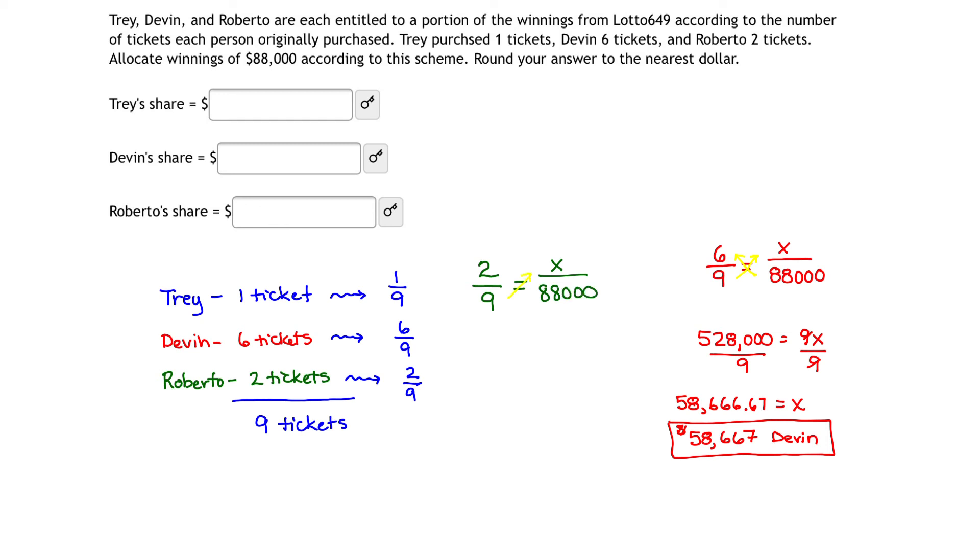Cross-multiplying and dividing gives us two times 88,000, or 176,000, equals 9X. Divide both sides by nine, so 176,000 divided by nine is simply 19,555.555, rounded to the nearest dollar tells us that Roberto is going to win $19,556.